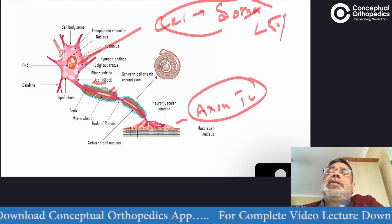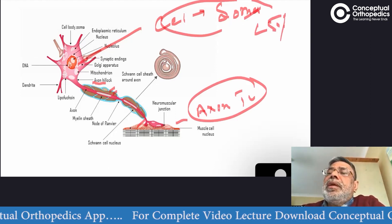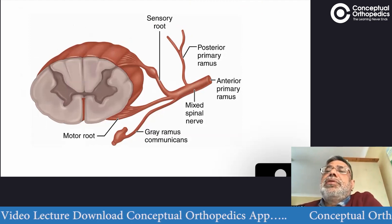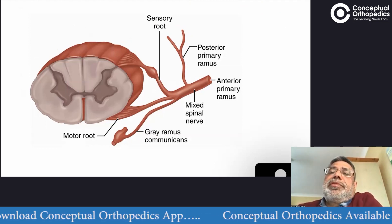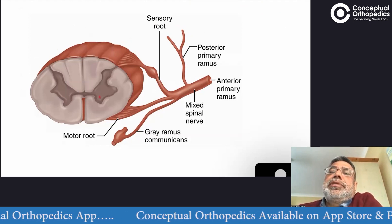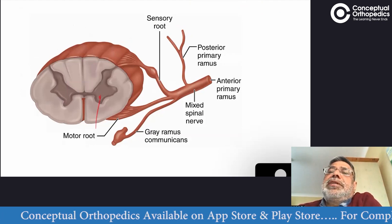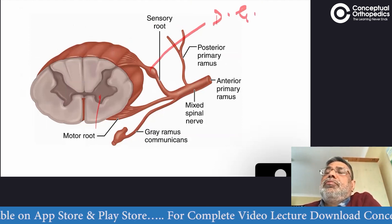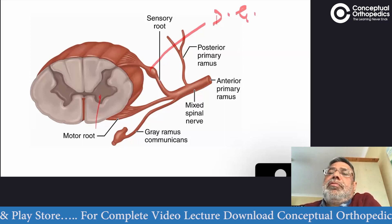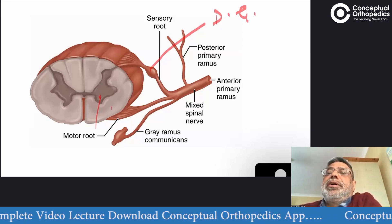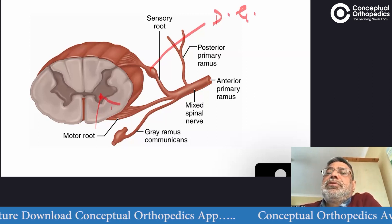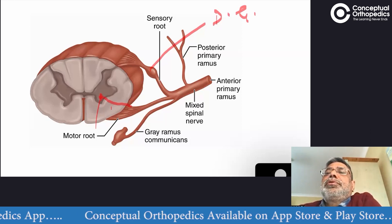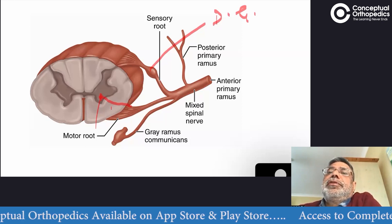These two ends — proximal and distal — constitute less than 5% of the nerve and are rarely seen because they are very close to either the muscles or the vertebral column. Inside the vertebral column, the motor fiber originates from the anterior horn cell, while the sensory fiber's cell body, the soma, is located in the dorsal root ganglion. The soma of the motor neuron is in the anterior horn cell — specifically the alpha neuron — which gives multiple rootlets.